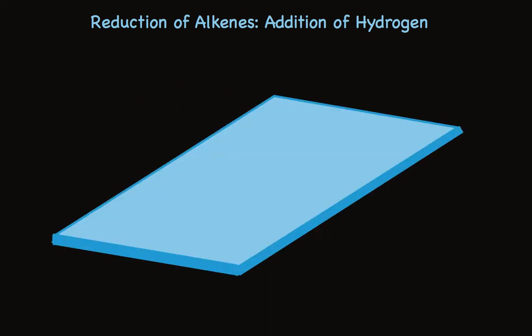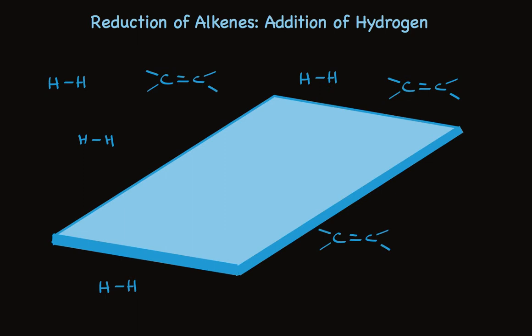The metal catalyst presents a surface that coordinates both hydrogen and alkene. Whether the molecules are in solution or in gaseous form, when they are present at the surface of the metal, hydrogen molecules coordinate to the surface of the metal in a way that breaks the sigma bond holding the two hydrogens together and forms loose bonds with the metal surface. Separately, the alkene pi bond coordinates to the metal surface. While this doesn't break the pi bond, it makes it susceptible to addition.